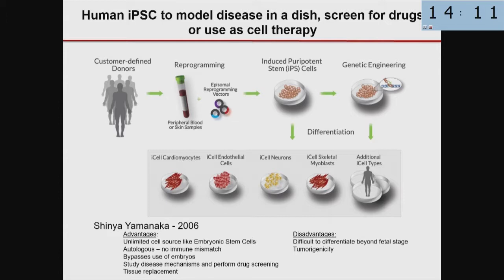What Yamanaka did was identify four transcription factors that, if overexpressed in cells taken from your blood or your skin, would turn them into pluripotent cells with features and potential just like an embryonic stem cell — they could divide without limit, become immortal in a sense, and also be differentiated into cardiomyocytes, endothelial cells of the vasculature, neurons, or skeletal myoblasts. You could also genetically engineer them and correct a gene. The advantages are that you have an unlimited source of these cells, just like embryonic stem cells.